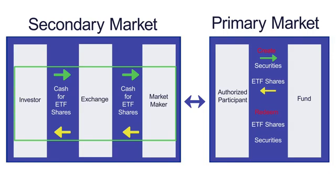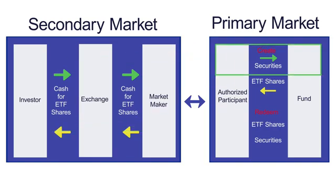Conversely, they will be buying the ETF where they can sell the underlying basket. So investors are buying the ETF throughout the day. Now let's talk about a creation: market makers have now sold more shares than they have, and at the end of the day they need to come to the fund in the primary market and create new shares of the ETF.